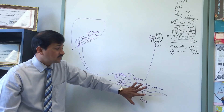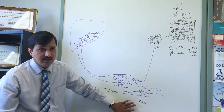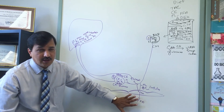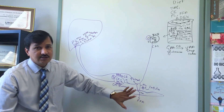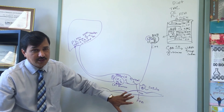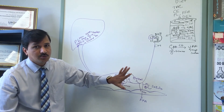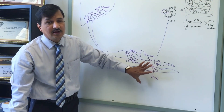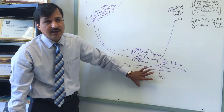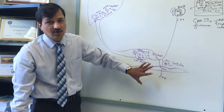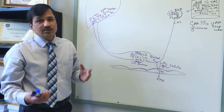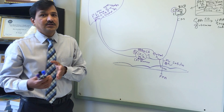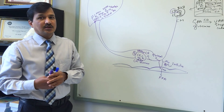Different tissues express different forms of LPL with different affinities. Cardiac muscle LPL has a low KM, meaning it acts on chylomicrons even at low concentrations. Adipose tissue LPL has a high KM — it is a low-affinity enzyme that acts on chylomicrons only when they are abundant in circulation.